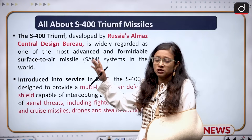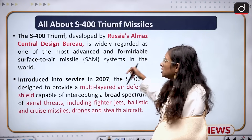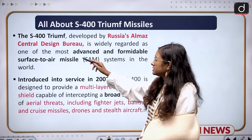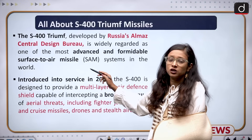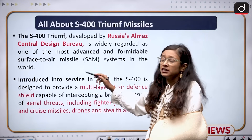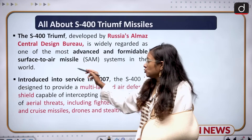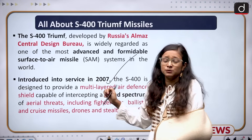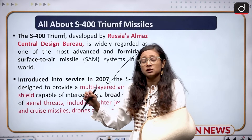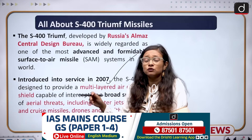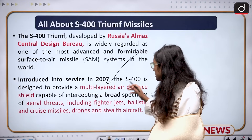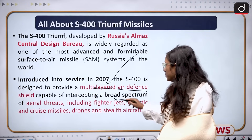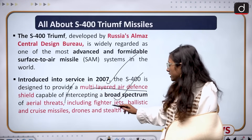First, we should know what the S-400 Triumph missile is. The S-400 Triumph was developed by Russia's Almaz Central Design Bureau and is widely regarded as one of the most advanced missile systems. It is a surface-to-air missile system introduced into service in 2007. Though development began in the 1980s, it was formally launched in 2007 due to some systematic technological issues.